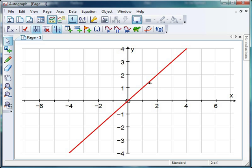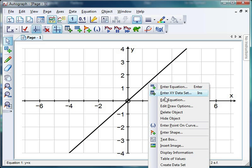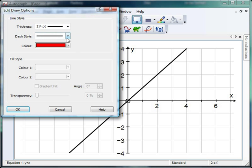Now I like to get y equals x and just make it a dashed line just so it distinguishes it from the other lines I'm going to draw. So click on it, right click, edit draw options and hopefully you get the option to make it a nice dashed line.